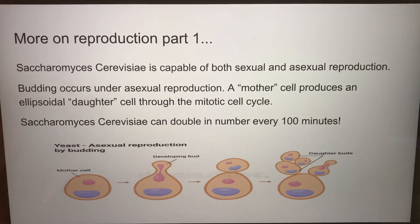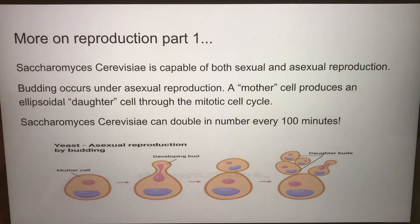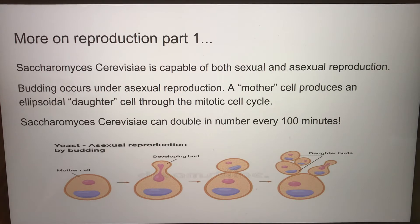Saccharomyces cerevisiae is capable of both sexual and asexual reproduction. Budding occurs under asexual reproduction — a mother cell produces an ellipsoidal daughter cell through the mitotic cell cycle. Under this form of reproduction, Saccharomyces cerevisiae can double in number every 100 minutes.